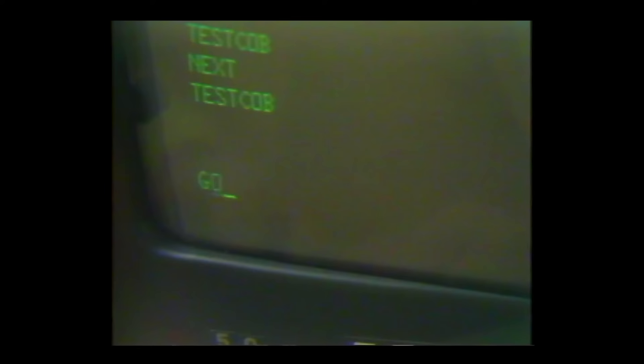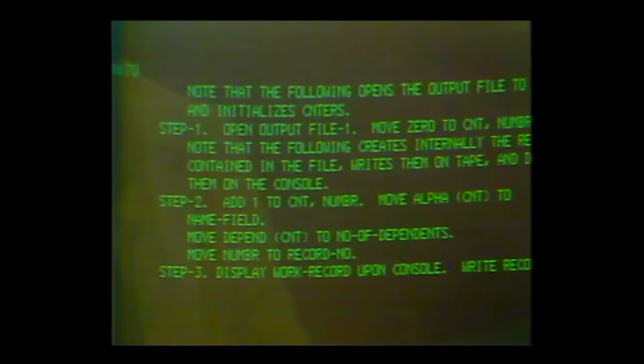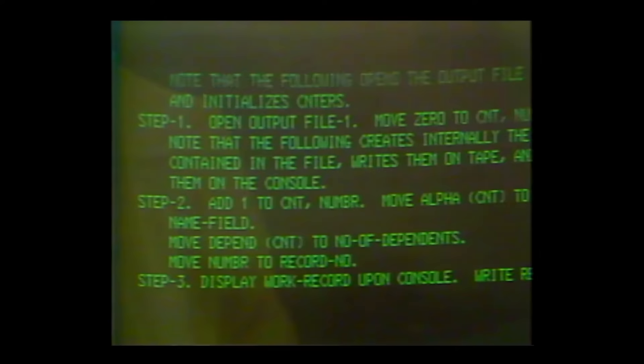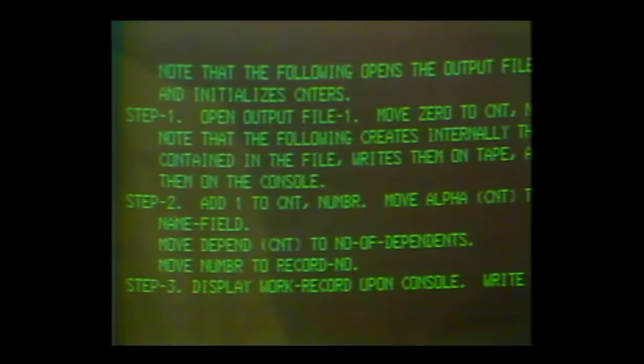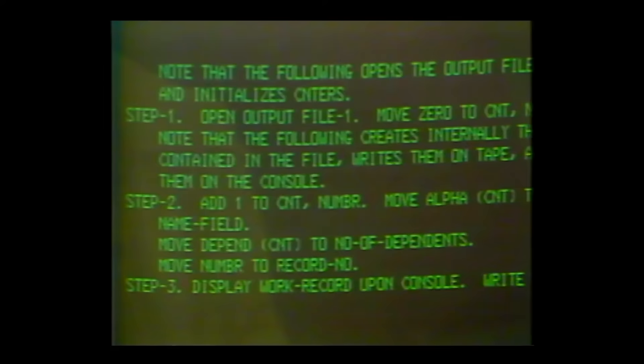We're now going to be communicating and interacting with test code. We enter 'next' and 'go' to get past COBOL initialization and to stop at the first executable statement. It tells us that it is stopped at source statement 62, first verb. Let's look at source statements 60 through 70 to see the first verb. We see that in source statement 62, the first verb is OPEN. We can now set some breakpoints to monitor certain conditions in our program, as we are not sure where the program has abended.